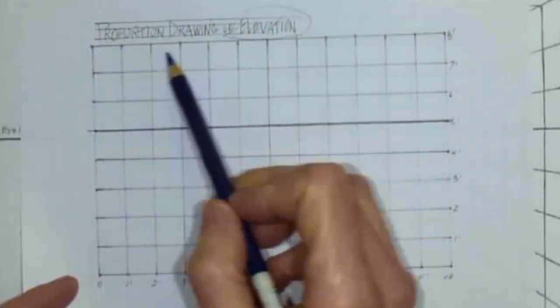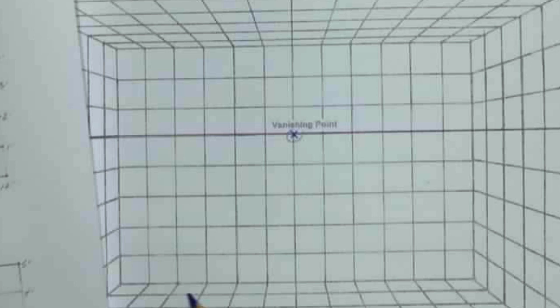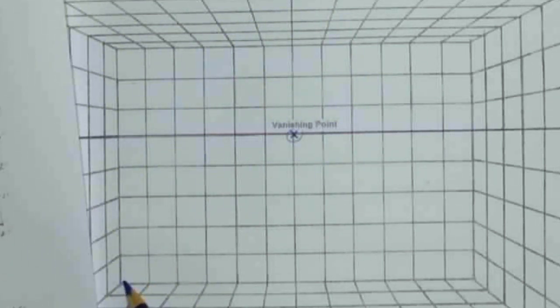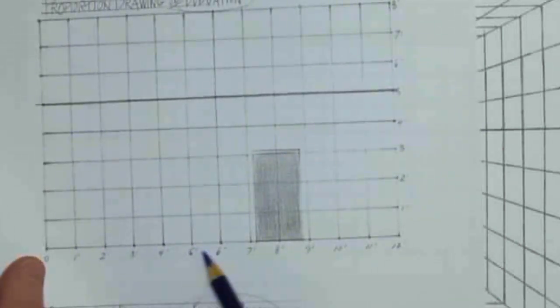This is an elevation of the back wall. So it has 12 feet across, and so does your elevation.